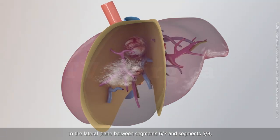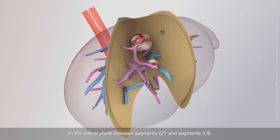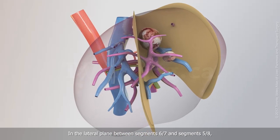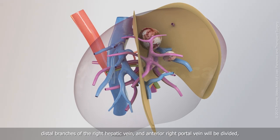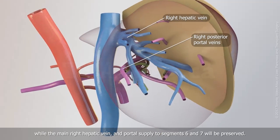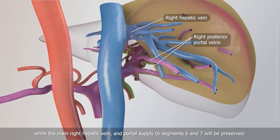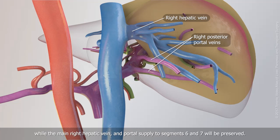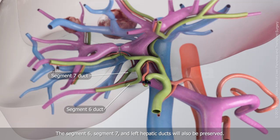In the lateral plane between segments 6-7 and segments 5-8, distal branches of the right hepatic vein and anterior right portal vein will be divided, while the main right hepatic vein and portal supply to segments 6 and 7 will be preserved. The segment 6, segment 7, and left hepatic bile ducts will also be preserved.